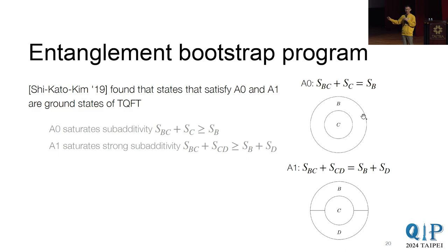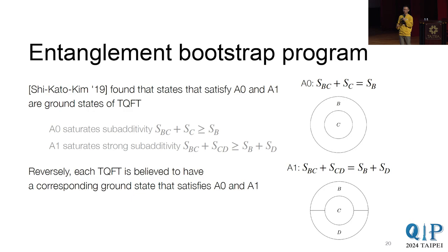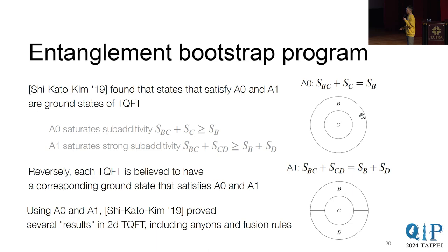So in fact, these A0 and A1, I just want to make a comment that A0 and A1 are actually very special because they saturate these subadditivity and strong subadditivity. And as I say, for these definitions to be good, you also want the reverse to hold. And it's indeed believed that for each TQFT, so it's a phase, and then there's a point somewhere in the phase whose ground state satisfies A0 and A1. So it's not shown, but we believe it.